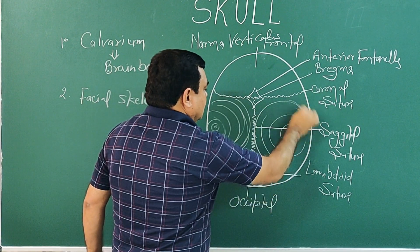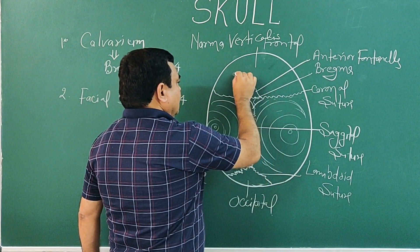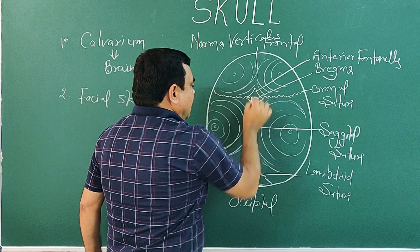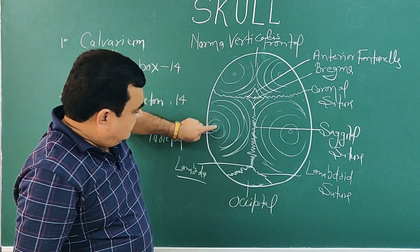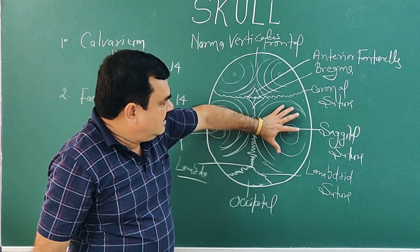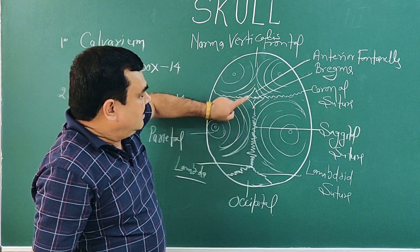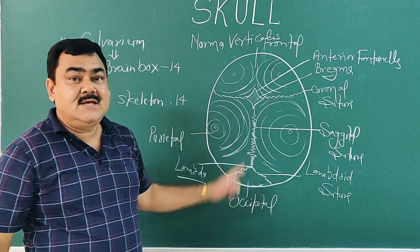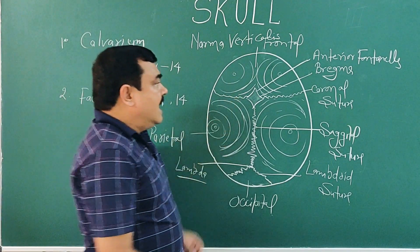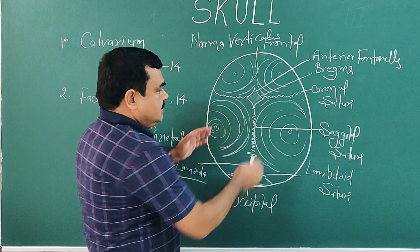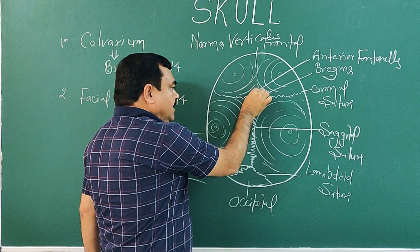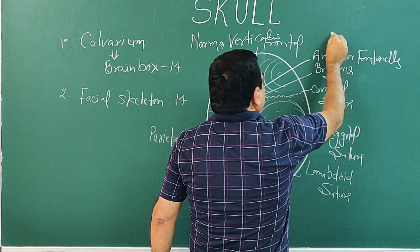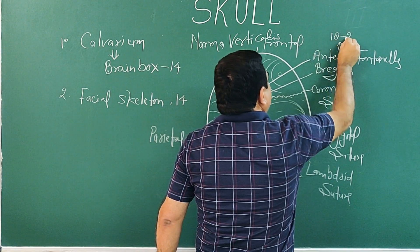At the time of birth, ossification occurs around the centers of ossification, but this part remains unossified, forming the anterior fontanel gap. As ossification continues, this gap is gradually filled, becoming completely filled during the age of 18 to 24 months.